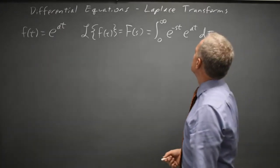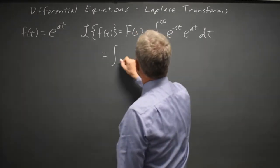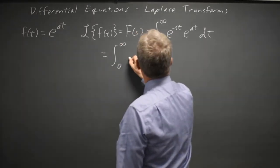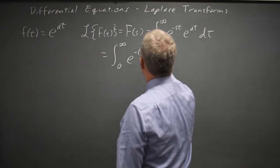And for e to the at, this gives us the integral e to the negative s minus a times t.